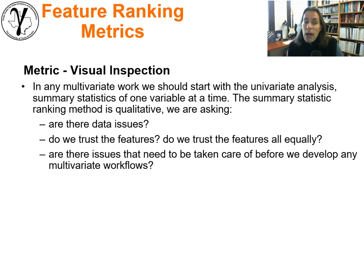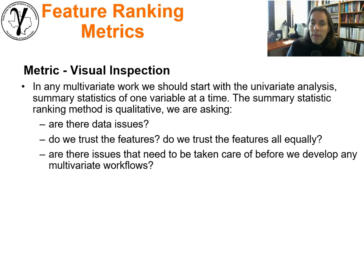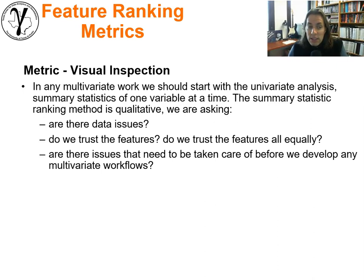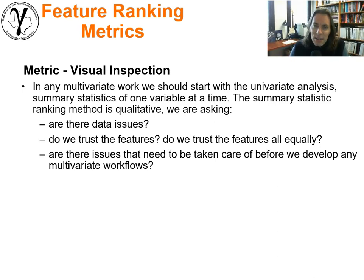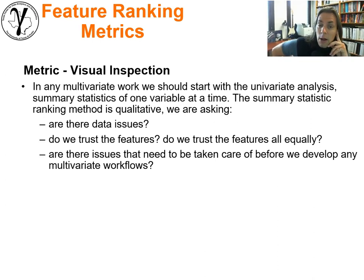Let's talk about the first metric: visual inspection. Anytime you have a multivariate setting with a bunch of different features, start with univariate analysis and statistics — look at one variable at a time, summary statistics, look and see what's going on. Are there any data issues? Maybe we don't trust a feature because there's something unreliable in its summary statistics. Do we trust all features equally, or are some more reliable measures? We may be able to discern that by performing simple visual inspection.